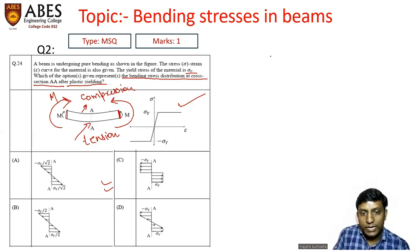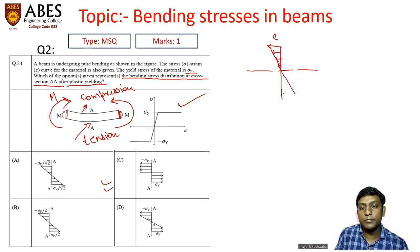So we know that if this is a neutral layer, then all the layers above this neutral would be subjected to compression which we can take as negative, and all the layers which would lie below this neutral layer would be subjected to tension. This is a general diagram.